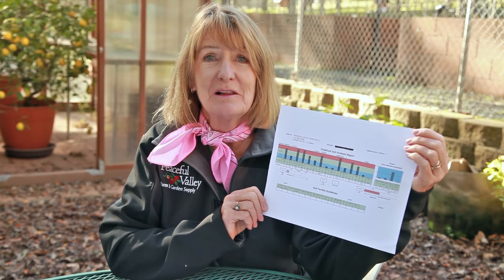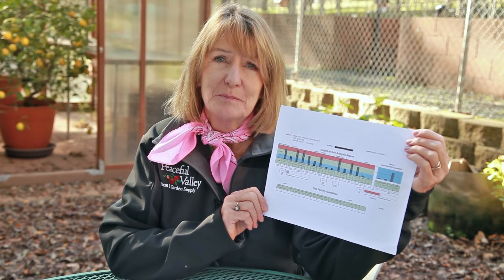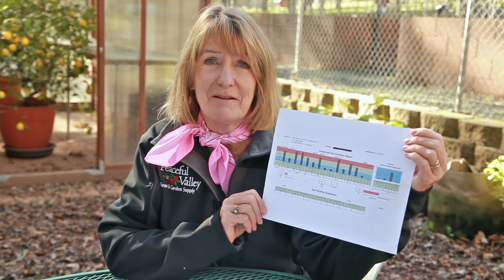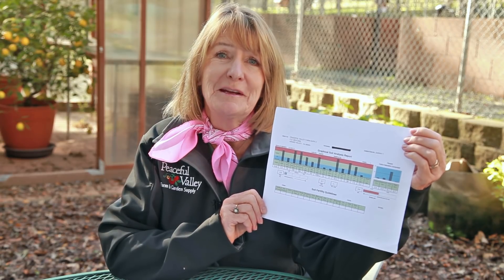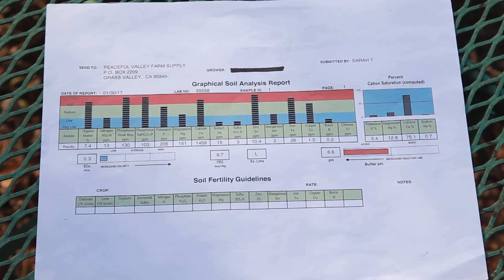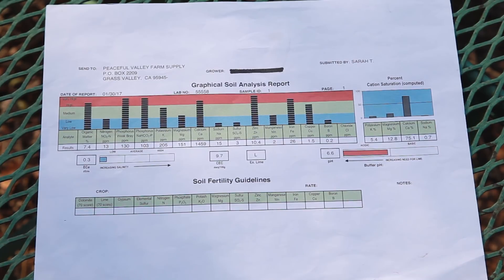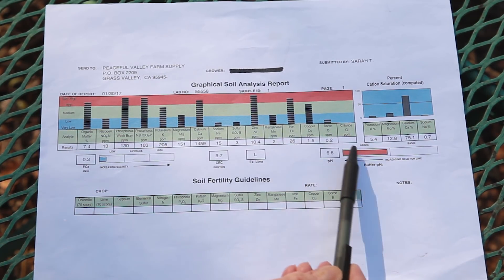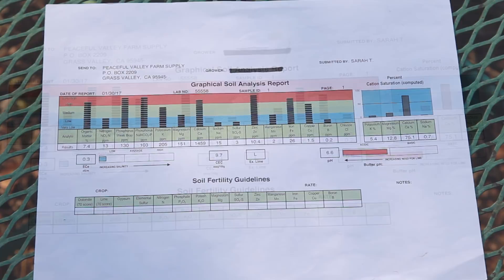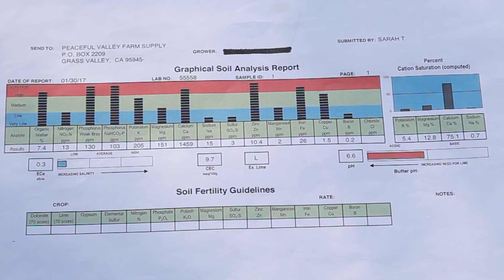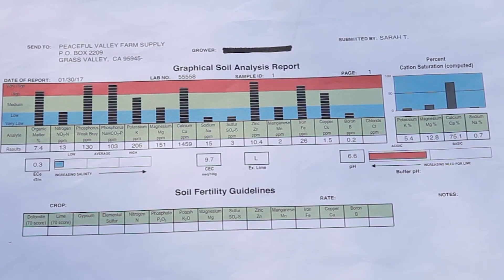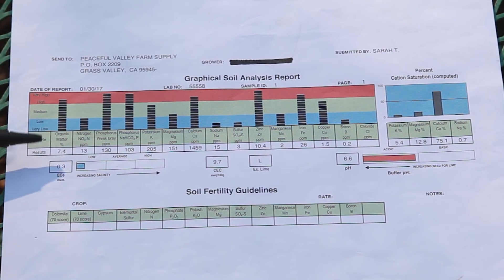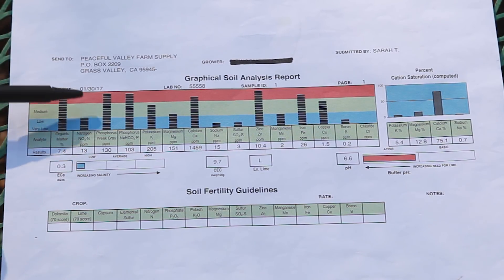At first glance, your soil analysis results can look like a bunch of overwhelming numbers and ratios on a graph. But these numbers all relate to each other and should be considered as a whole when determining your soil needs. The first part to consider is the chart of nutrient levels. On this chart, you'll see the amount of each of the micro and macro nutrients as well as organic matter, and if you opted for the complete soil analysis, the trace minerals as well. The chart includes both the concentration of each nutrient and a bar graph showing whether that value is high or low.